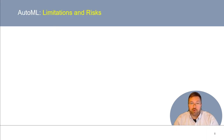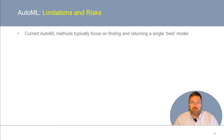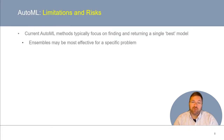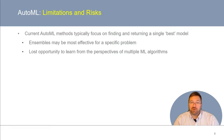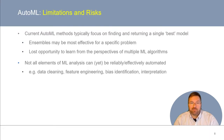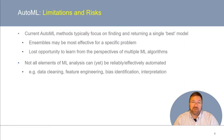Before we move on to Streamline, it's important to acknowledge the current limitations and risks of AutoML methods in general. Current AutoML methods typically focus on finding and returning a single best model to the user. Two potential drawbacks are that ensembles of models may ultimately be the most effective solution, and by focusing on the single best algorithm, there's a lost opportunity to learn from the perspectives of multiple machine learning algorithms, each of which have their own assumptions and biases in approaching a new problem.